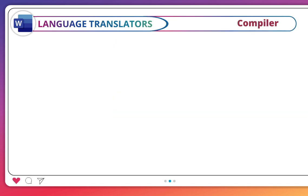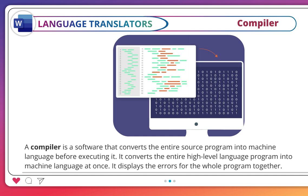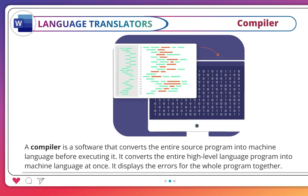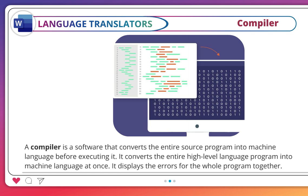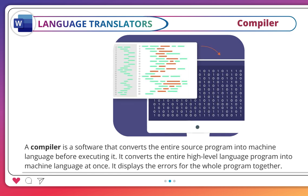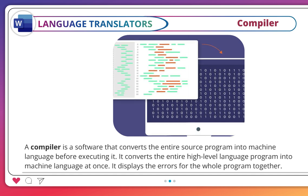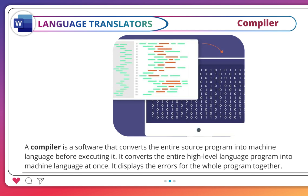A compiler is a software that converts the entire source program into machine language before executing it. It converts the entire high-level language program into machine language at once, and it displays the errors for the whole program together.